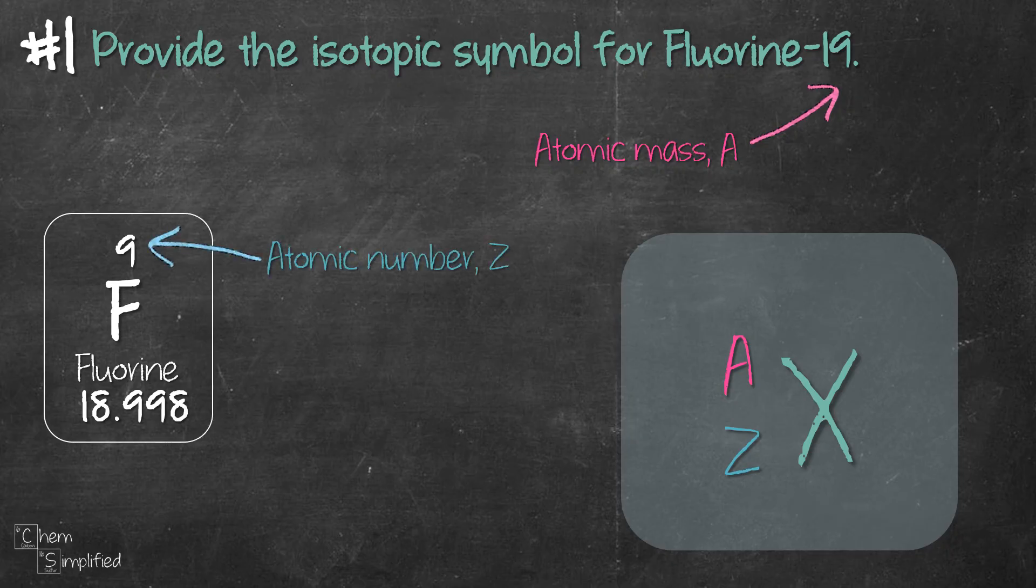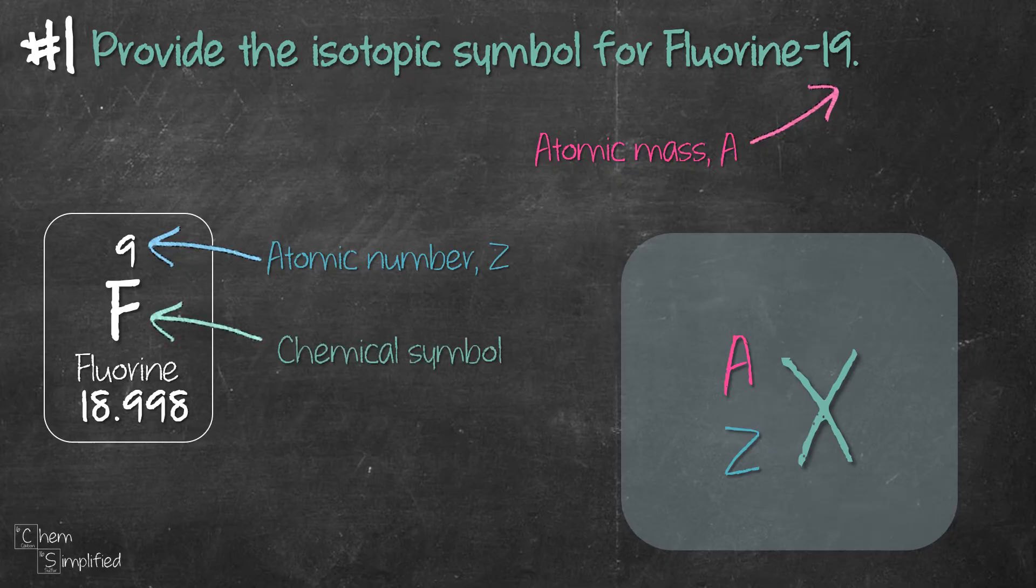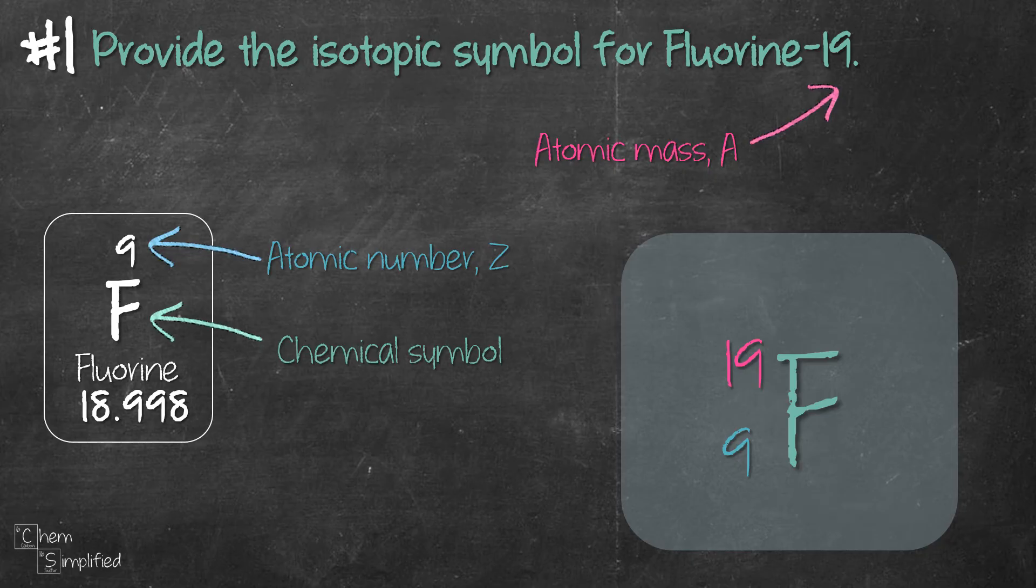9 is the atomic number, that's the small whole number. F is the chemical symbol. So these are the three information that we need to plug into the isotopic symbol.